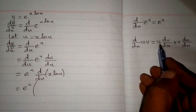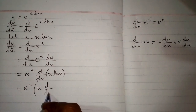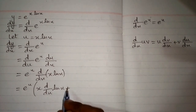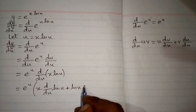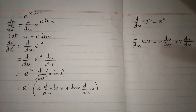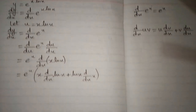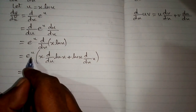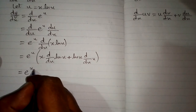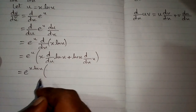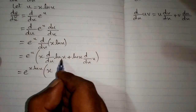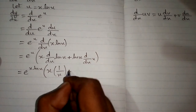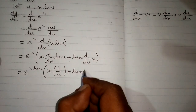So first we will write u, which is x, times the derivative of v, which is the derivative of ln x, plus v times the derivative of x. We can write the value of u over here, which is x times ln of x. The derivative of ln x is 1 upon x, and the derivative of x is 1.